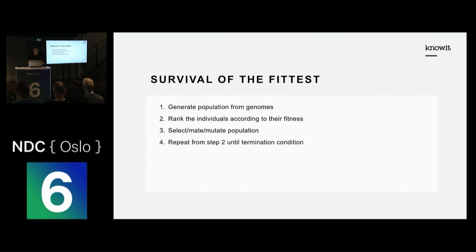The offspring hopefully have good qualities from both parents. In this step, there's also a possibility for mutation — meaning an individual gets a trait not from the mother or the father, but something that has mutated. For example, if both parents have blue eyes and I get green eyes, that may be due to mutation.